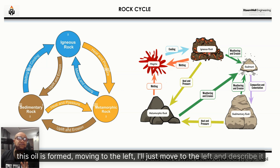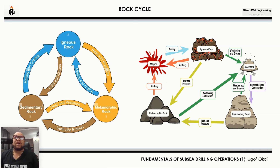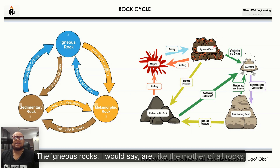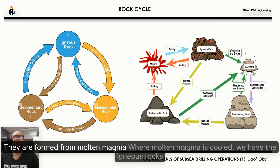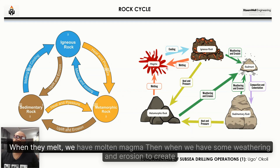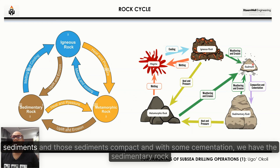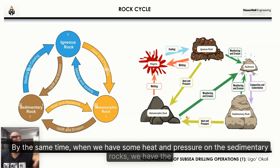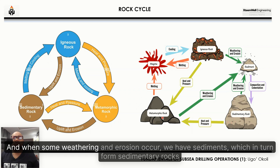What you see on the left is what we have on the right. We have three types of rock: the igneous, the metamorphic, and the sedimentary rocks. The igneous rocks are like the mother of all rocks — they are formed from molten magma. When molten magma cools we have igneous rocks; when they melt we have molten magma again. When we have weathering and erosion creating sediments, and those sediments compact with cementation, we have sedimentary rock. When we have heat and pressure on the sedimentary rocks we have metamorphic rocks.